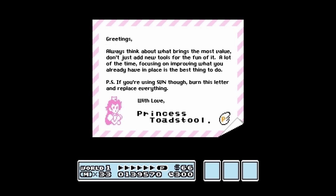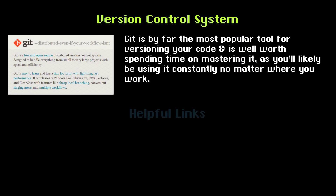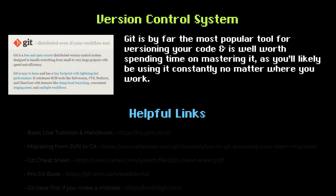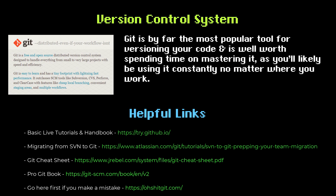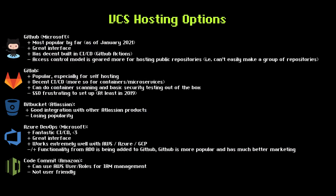First up, we need a place to store our code. We'll be using Git as our version control system along with everyone else. There are quite a few options for hosting the repositories themselves, everything from GitHub, GitLab, Bitbucket, Azure DevOps, CodeCommit, or even hosting a Git server ourselves.